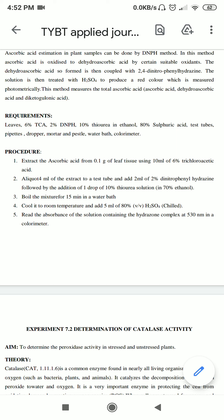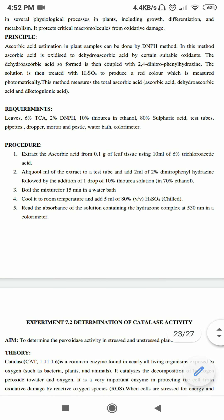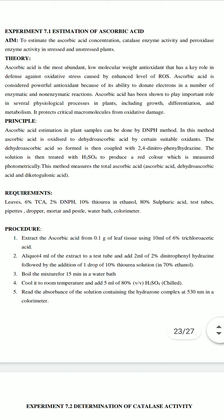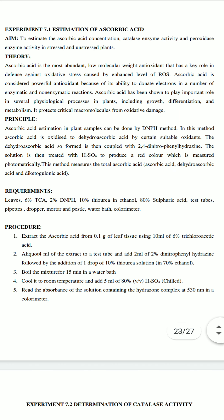When boiling is complete and the solution returns to room temperature, add 5 ml of 80% H2SO4 — this will turn the solution red. This red color is due to the hydrazone complex formed between DNPH and dehydroascorbic acid, and is measured at 530 nm in the colorimeter. This gives an estimate of total ascorbic acid in a stressed plant; comparing with an unstressed plant reveals how much stress can induce synthesis of ascorbic acid.